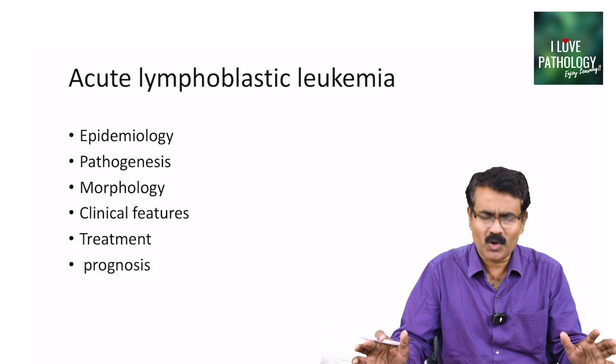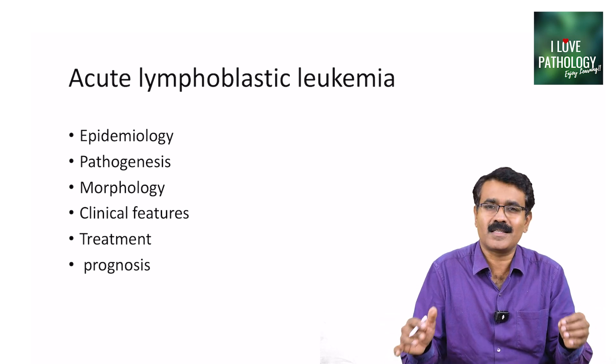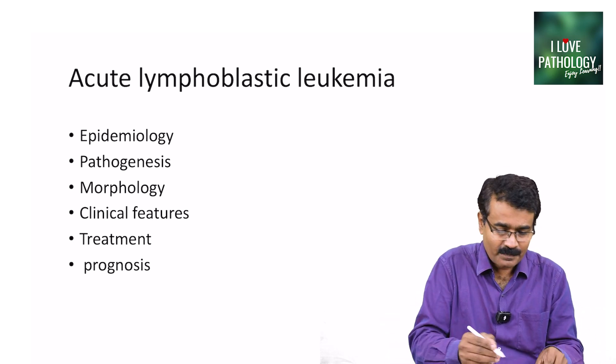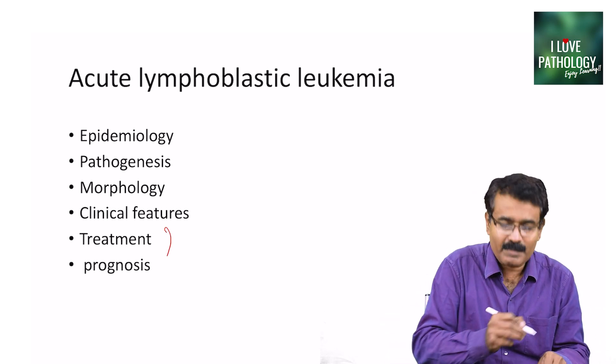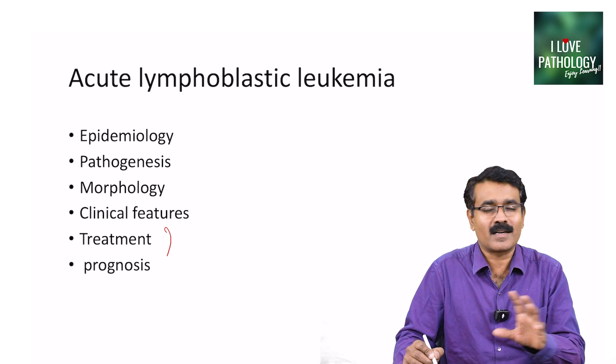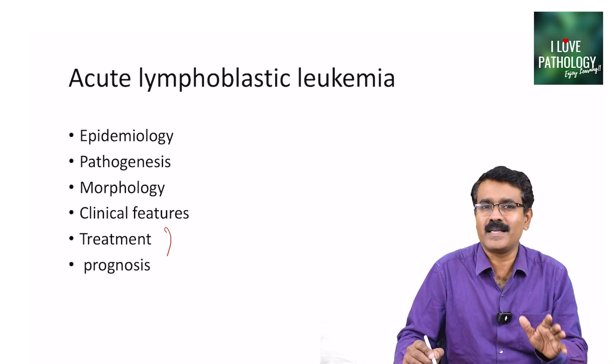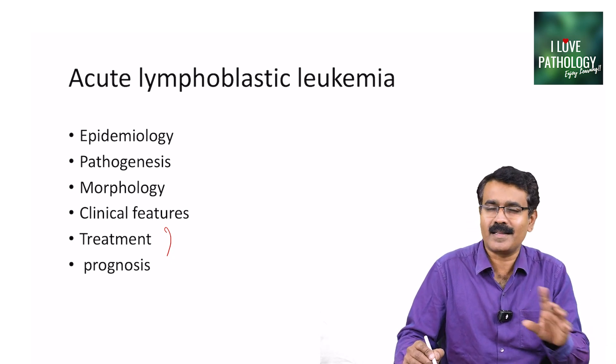That's all about ALL. We talked about the epidemiology, the pathogenesis, the morphology, clinical features, treatment, and prognosis of ALL. That completes today's topic. In my next session, I will be discussing another important lymphoid neoplasm — chronic lymphocytic leukemia. Till then, stay tuned. Bye-bye.